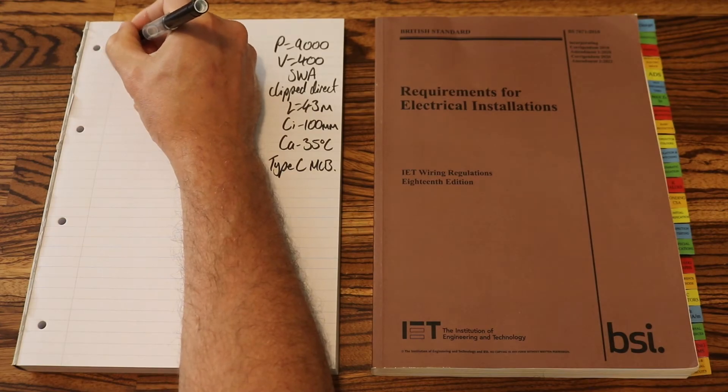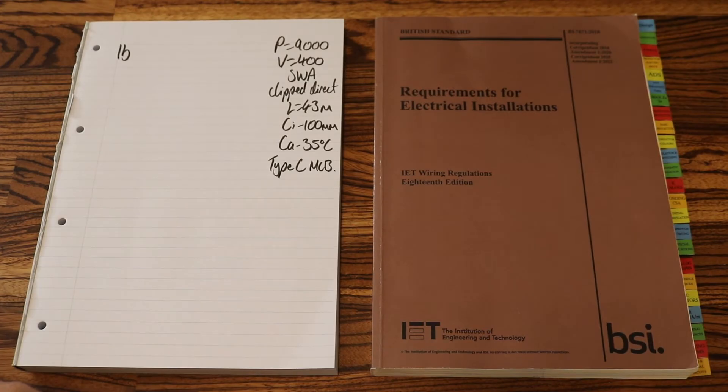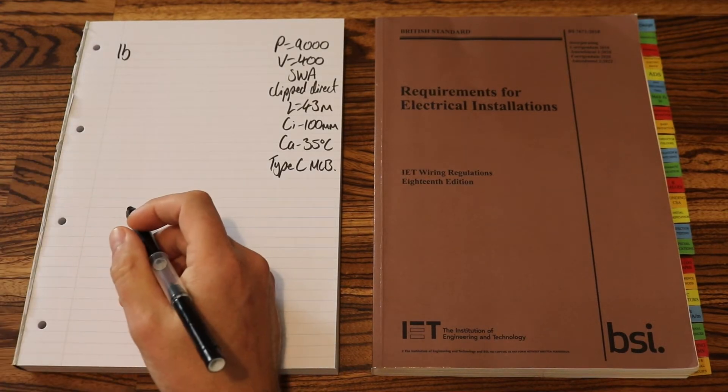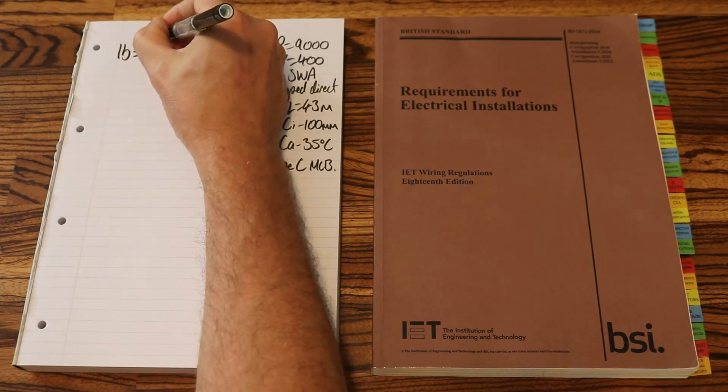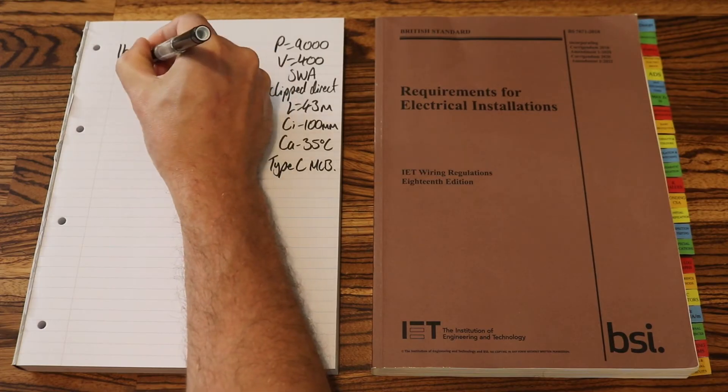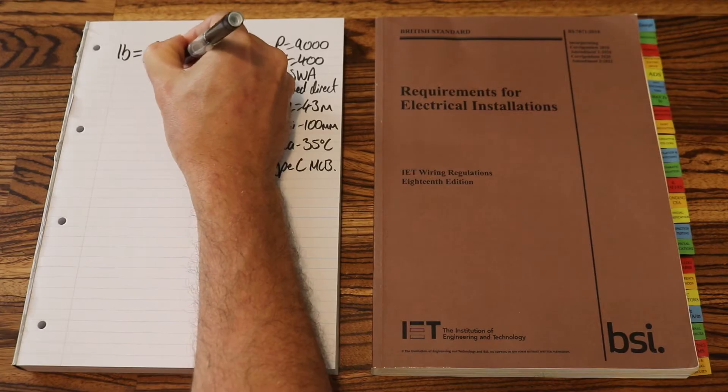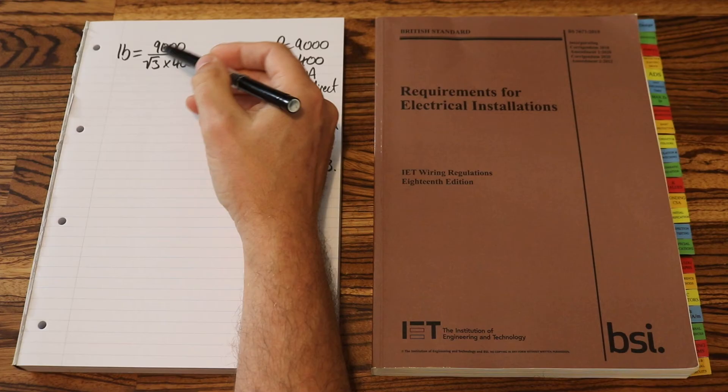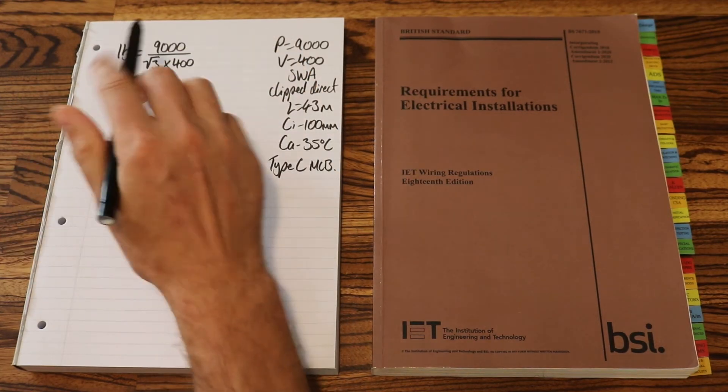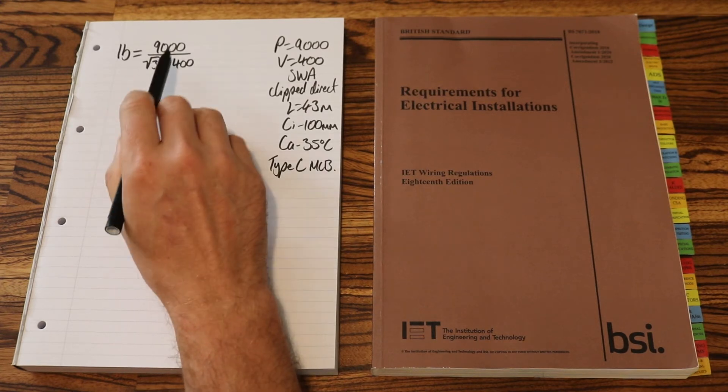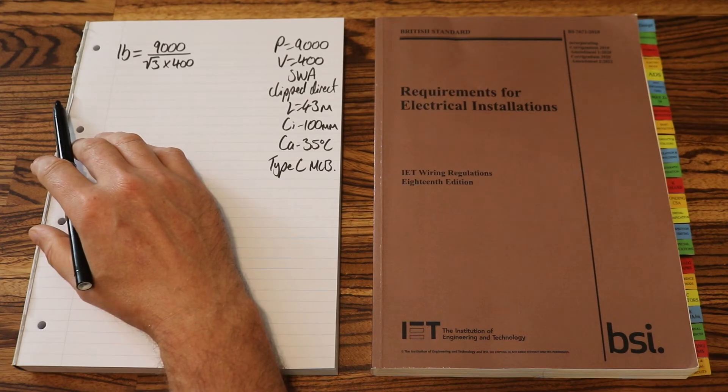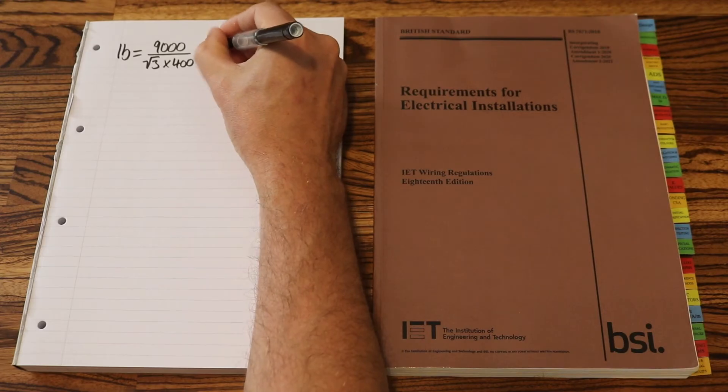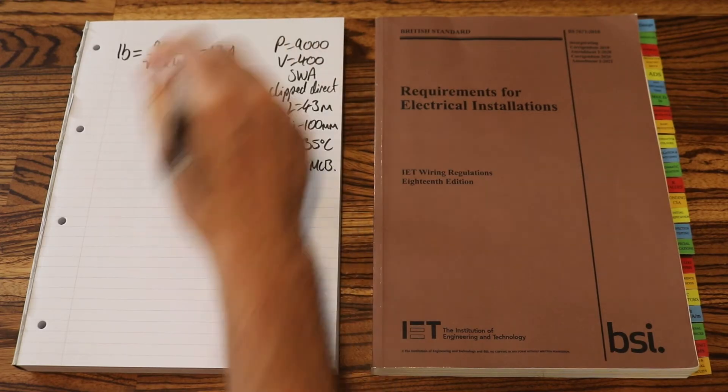So let's get on with our cable calculations. Our first step, IB. Now if you've gone onto the website and you've downloaded the cable calculation guide, we are going to be doing steps 1 to 8. Step 1 tells you all of the different ways of working out that IB. So when we've got a three-phase circuit, our IB will be 9000 over square root of 3 times 400. When you punch this into the calculator, be wary that you don't end up square rooting the whole of the bottom part. And with some rounding, that comes in at 12.99, so we'll round that to 13 amps.